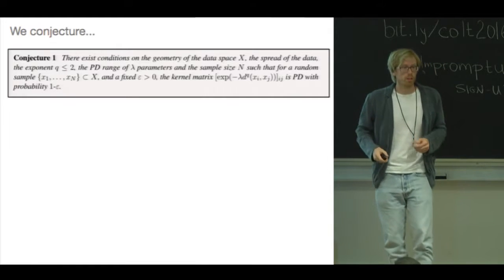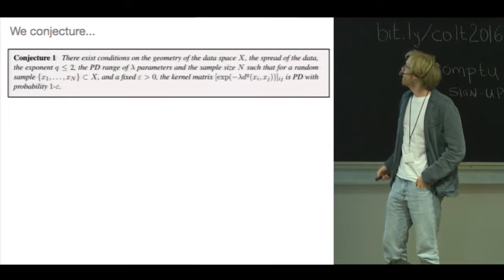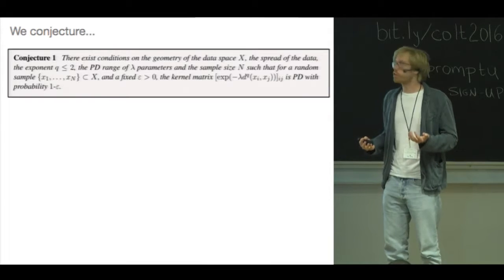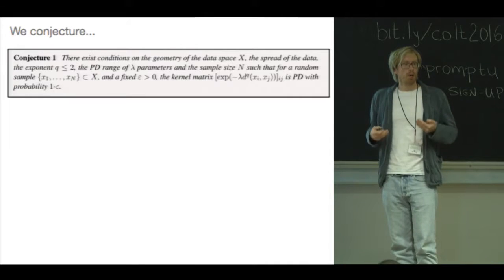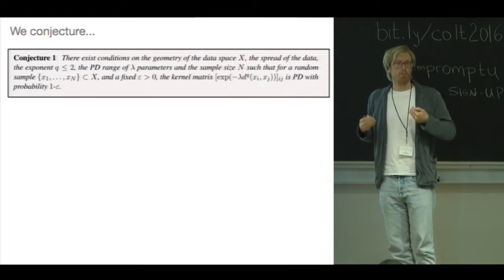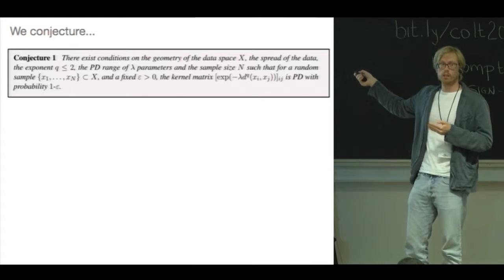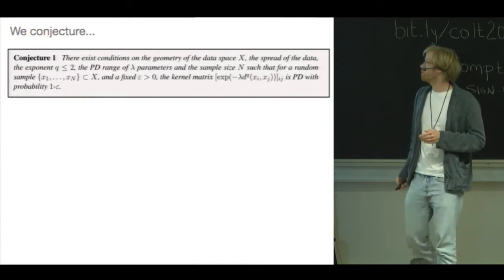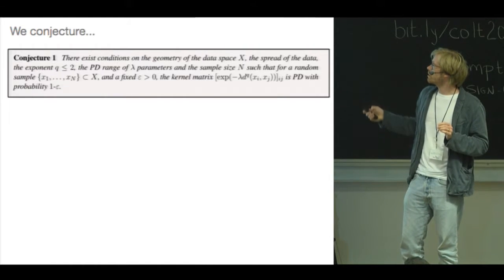So here are the conjectures, and they're loosely formalized. So it's great if you can also help us just formalize those. So basically, we believe that there will be conditions on the actual underlying geodesic space, as well as the spread of the data, such that you get a positive definite kernel matrix, or such that there will be a range of lambdas where you get a positive definite kernel matrix with high probability. So this is not the same as saying that there will be a positive definite kernel, just that the kernel matrix with high probability should be positive definite. We find this empirically, and it would be sort of natural if that's the case, but we would like to formalize it.